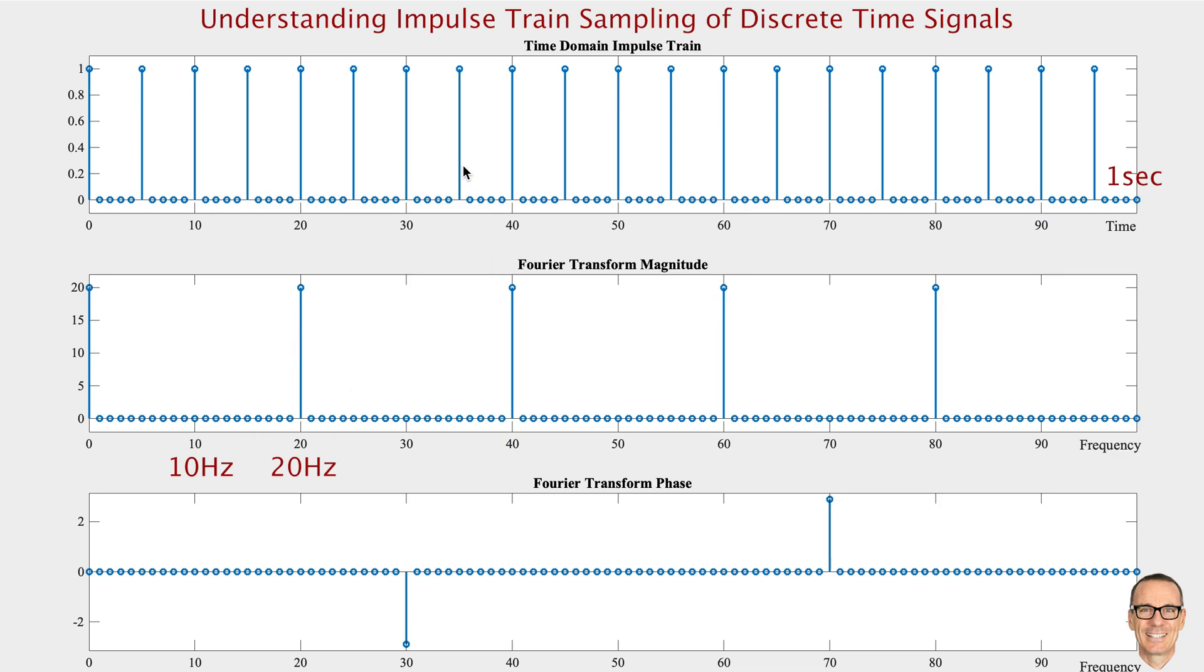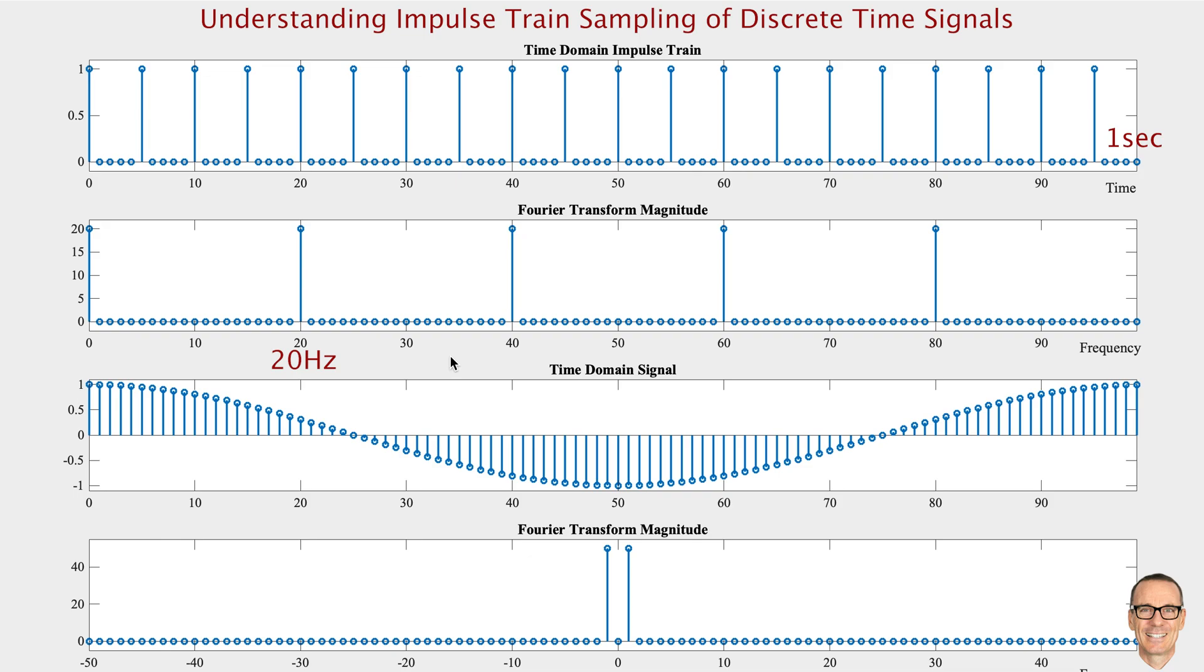So hopefully this gives more intuition into the impulse trains and what their functions are in the frequency domain. Now let's use them for sampling and digital sampling. Here we have the top two curves that are the same as we just had for the impulse train and its Fourier transform magnitude.